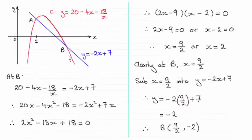Hi there. So for this question then, you had to work out the coordinates of B, and B turned out to be 9 over 2 for x and minus 2 for y.